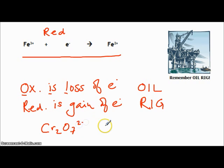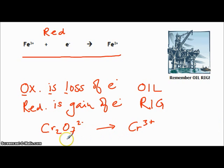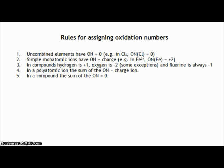If we look at the reaction of the dichromate ion, Cr₂O₇²⁻, which reacts to form Cr³⁺ ions — as we go through this unit you'll become more familiar with that — it's very difficult just by looking at this reaction to work out whether it's oxidation or reduction. To deal with that problem, chemists have introduced the concept of oxidation numbers to allow us to track the movement of electrons.